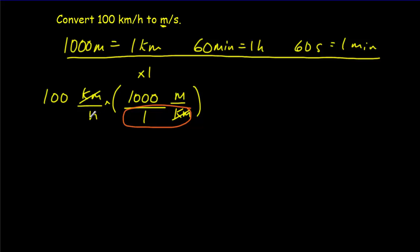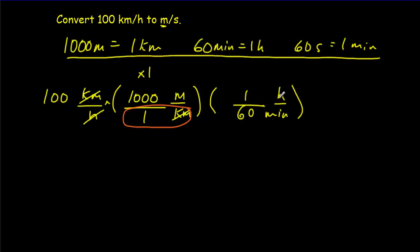Now I want to get rid of the hours. The hours are in the denominator, so I want to put an hour in the numerator. I know that one hour is worth 60 minutes, and now the hours cancel out. I'm left with meters per minute — not quite what I want, but once again a step closer.